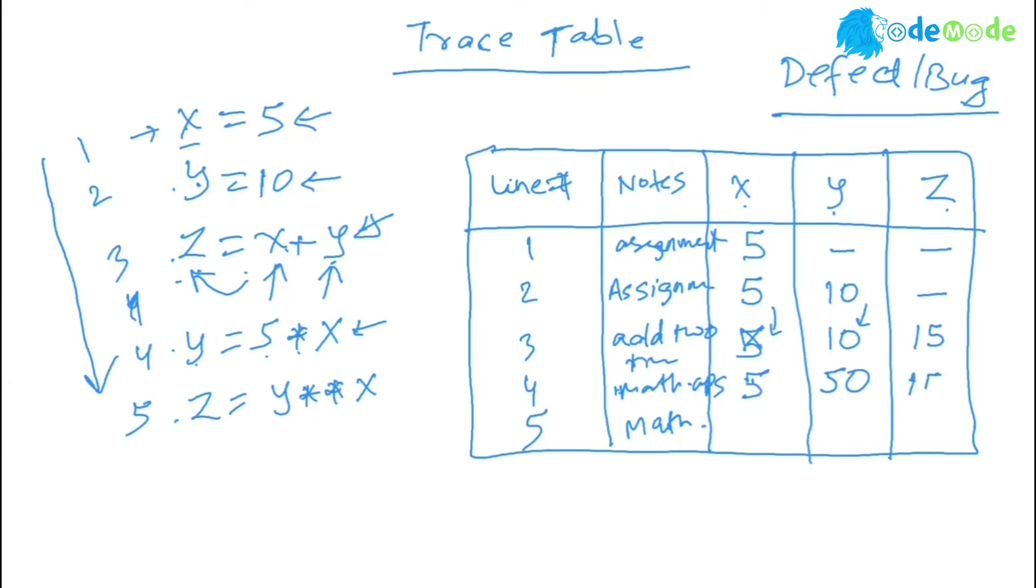Then the next line, z equal to y power x. So x is still 5, y is 50, and this becomes 50 to the power of 5, whatever it is.